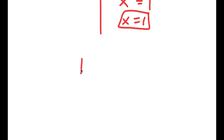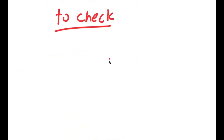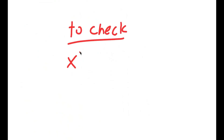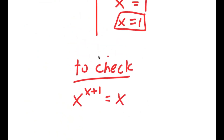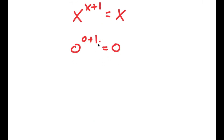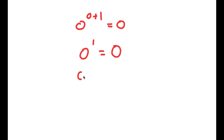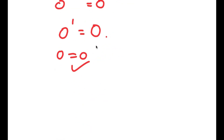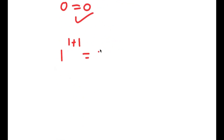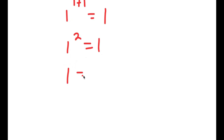To check, the original equation was x to the power of x plus 1 equals x. For x equals 0: 0 to the power of 0 plus 1 equals 0, and since 0 to the power of 1 equals 0, we get 0 equals 0. For x equals 1: 1 to the power of 1 plus 1 equals 1 to the power of 2, which equals 1. So 1 equals 1. Both solutions check out.